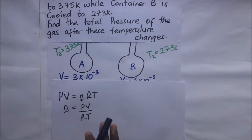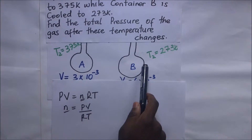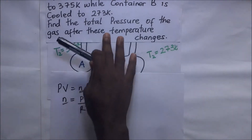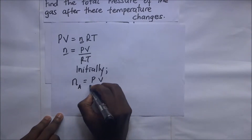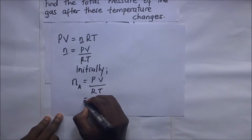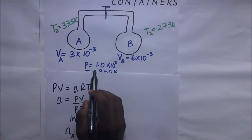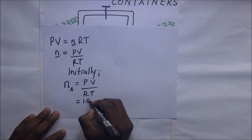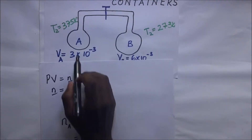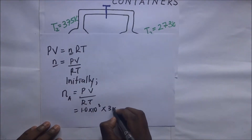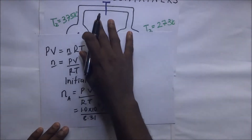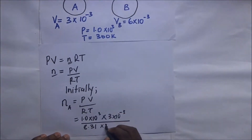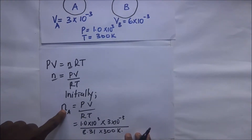Before subjecting the gas to temperature changes, the initial number of moles in container A is: n_A = PV / RT = (1.0×10³ × 3×10⁻³) / (R × 300), where R = 8.31 J/mol·K and the initial temperature is 300 kelvin.